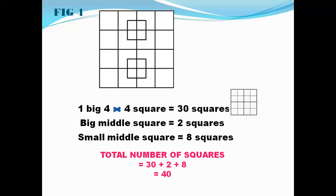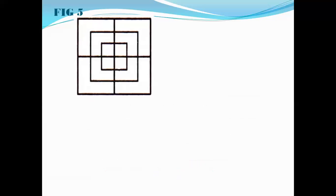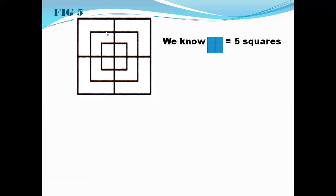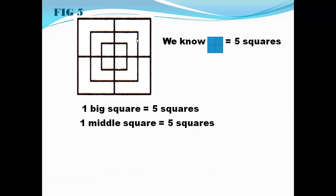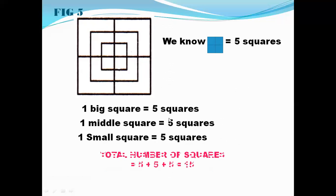Moving on to figure 5. We can see there are 3 squares — one big square, a middle square, and a small square — and there is a plus sign in between each, as we studied in figure 1. When there is a plus sign, we have 5 squares. So considering the bigger square, there are 5 squares; the middle square also has 5 squares; and the small square again has 5 squares. So the total number of squares is 5 plus 5 plus 5, which is 15 squares.